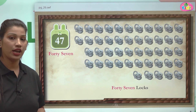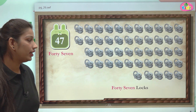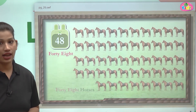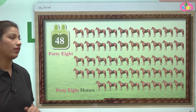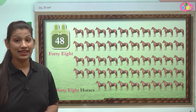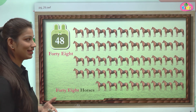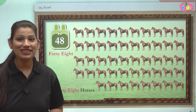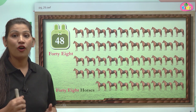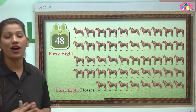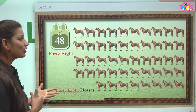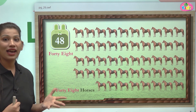After 47, there comes number 48. Here we can see horses. These horses are 48 in number. Horses run very fast; they run so quickly. They also help us carry loads. There are 48 horses.